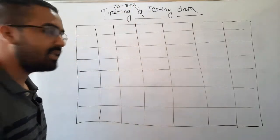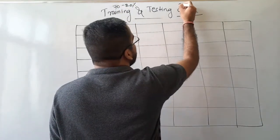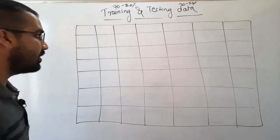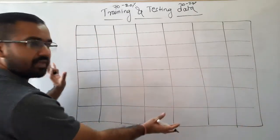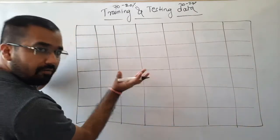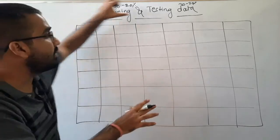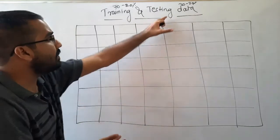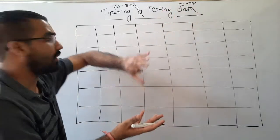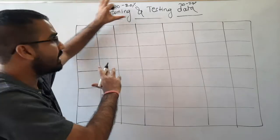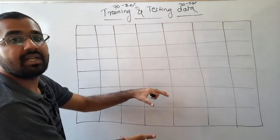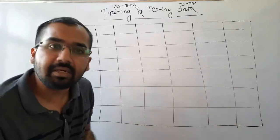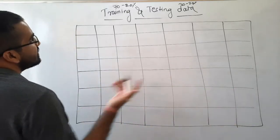In general, the trend followed is pretty simple: 70 to 80 percent is considered as training data, and 30 to 20 percent is considered as testing data. So out of this whole dataset, 70 to 80 percent will be used for training and called the training dataset, and the remaining portion — around 20 to 30 percent — will be used for evaluating the trained model as testing data.